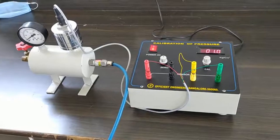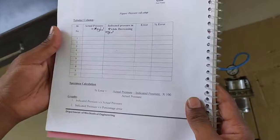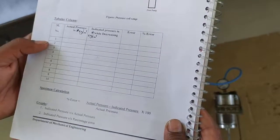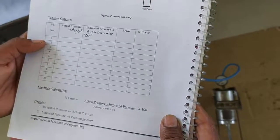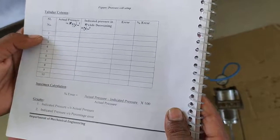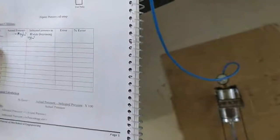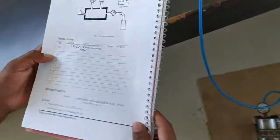This is the tabular column. The tabular column consists of 5 columns: serial number, actual pressure expressed in kg per centimeter square, indicated pressure, error, and percentage of error. We will do this experiment both in ascending order as well as in descending order.